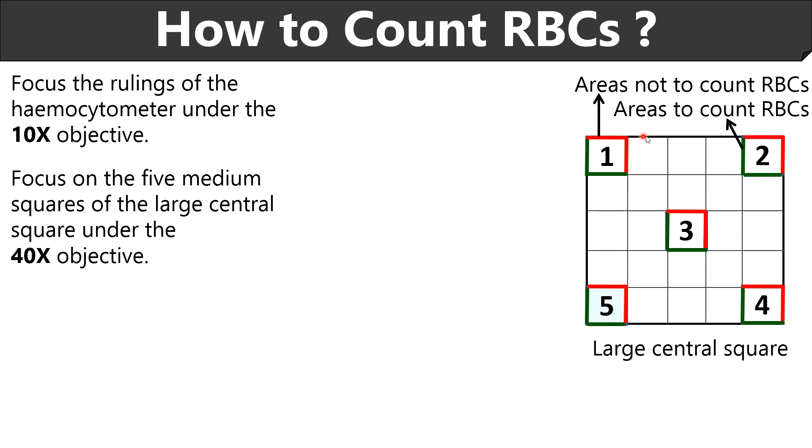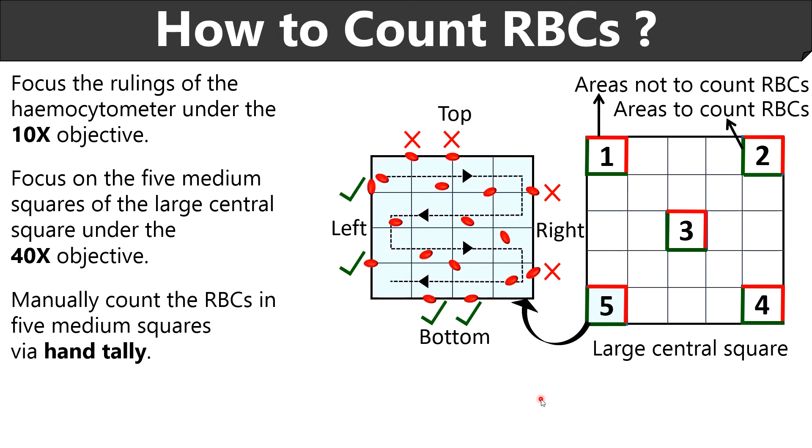Here the red lines indicate the areas not to count RBCs and the green lines indicate the areas to count RBCs. So we can manually count the RBCs within these 5 medium squares and the RBCs at left and bottom margins. We can follow this pattern of counting RBCs via hand tally.